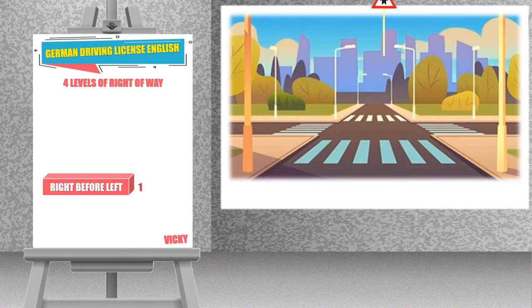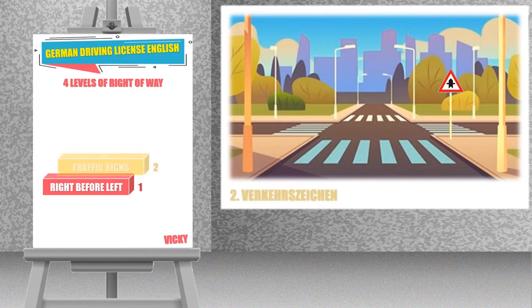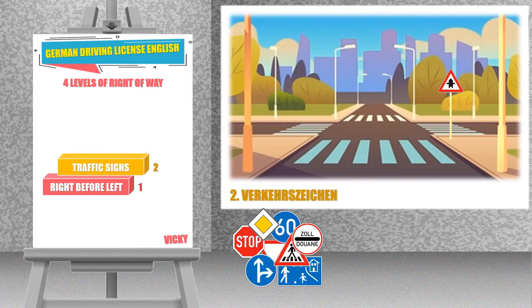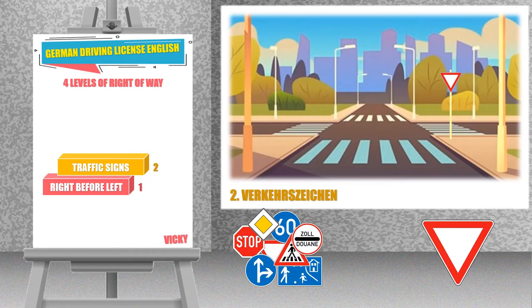What if we have traffic signs? Does the rule right before left apply? There comes level 2: Fahrbahnzeichen, the traffic signs. Traffic signs override the rule right before left. Whenever you come across positive traffic signs like this, you have priority. And wherever you see traffic signs like this, you have to give your right of way.